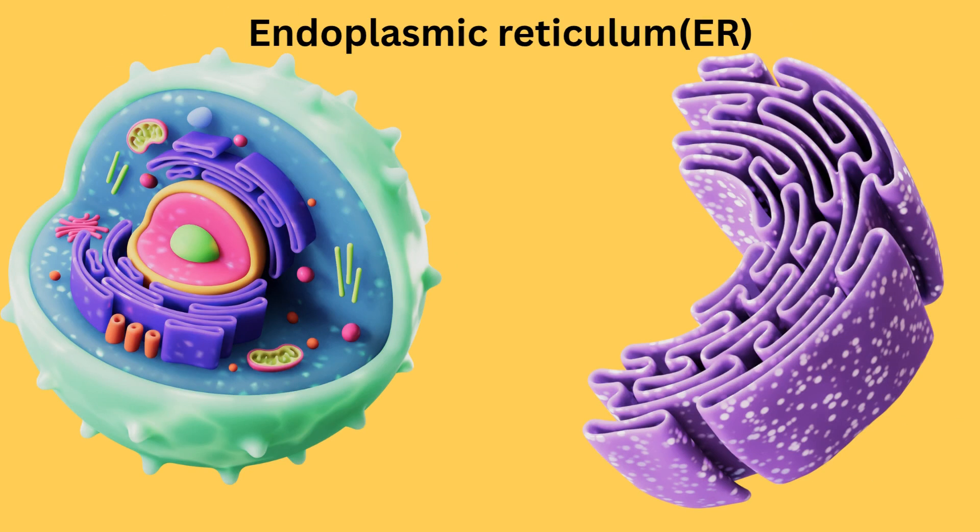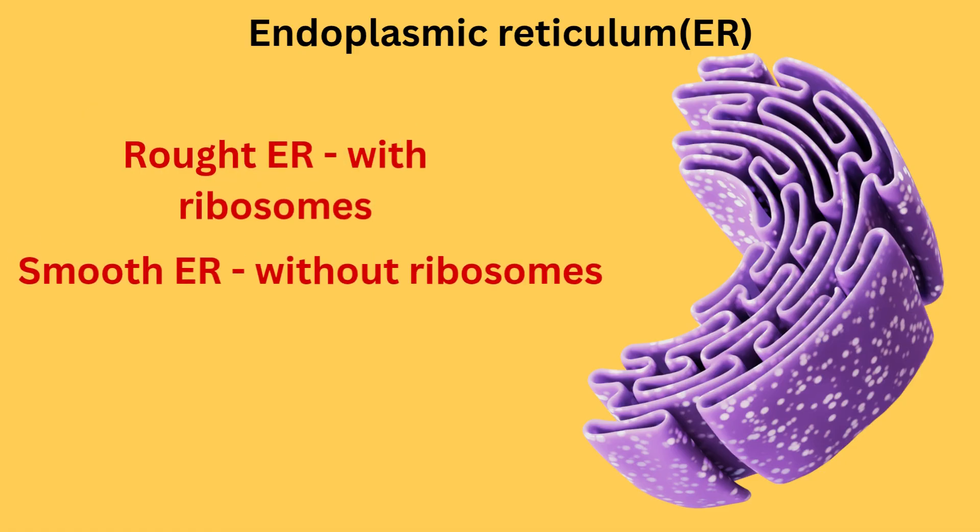Now, this is endoplasmic reticulum. They are a network of tubes for transporting materials. There are two types: rough endoplasmic reticulum and smooth endoplasmic reticulum. Rough ER has ribosomes on it. They make proteins in the form of enzymes and hormones. And smooth ER makes lipids and steroid hormones.